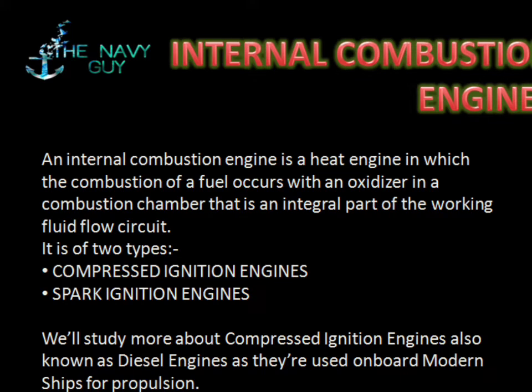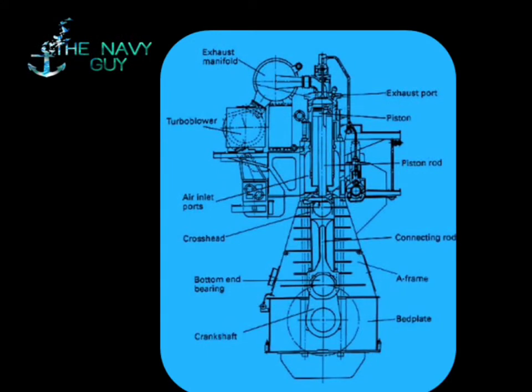Now we'll talk about internal combustion engines in brief, and explain further in later videos. An internal combustion engine is a heat engine in which the combustion of a fuel occurs with an oxidizer in a combustion chamber that is an integral part of the working fluid flow circuit. It is of two types: compressed ignition engines and spark ignition engines. We'll study more about compressed ignition engines, also known as diesel engines, as they are used on board modern ships for propulsion.